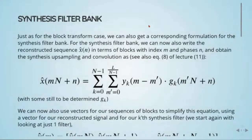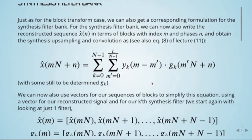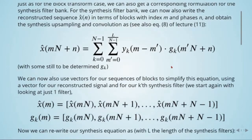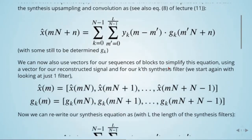Now we move to the synthesis filter bank. Just as for the block transform case, we can also get a corresponding formulation for the synthesis filter bank. We can write the reconstructed sequence X-hat of n in terms of blocks with index m and phases n, and obtain the synthesis upsampling and convolution as seen in the previous lecture. That is given by equation number eight, with some still-to-be-determined G. We can now use vectors for our sequences of blocks to simplify this equation.